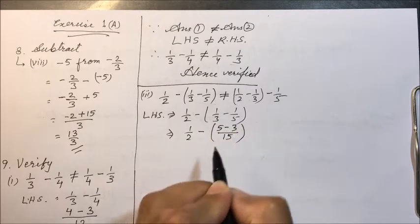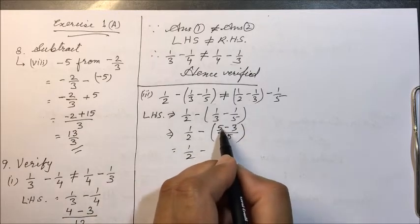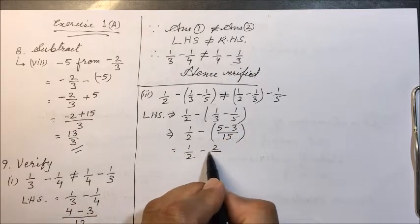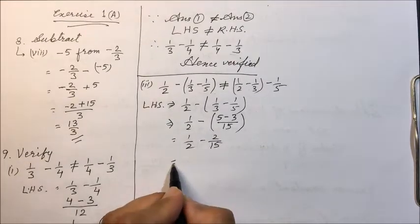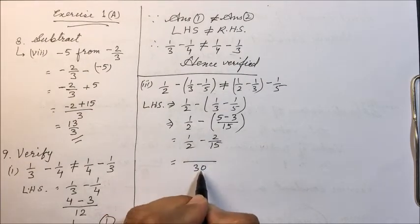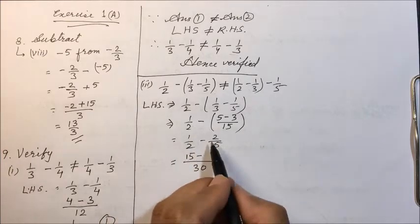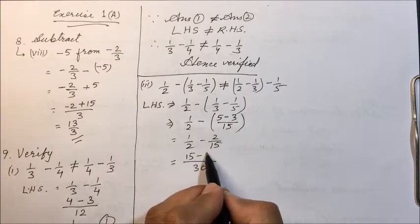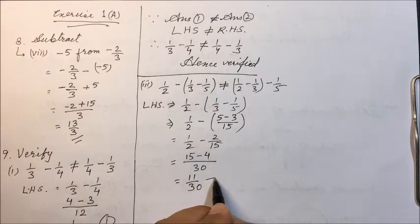So LHS becomes 1/2 minus 2 upon 15. Taking LCM as 30, we get 15 minus 4, which is 11 upon 30. This is our first result.